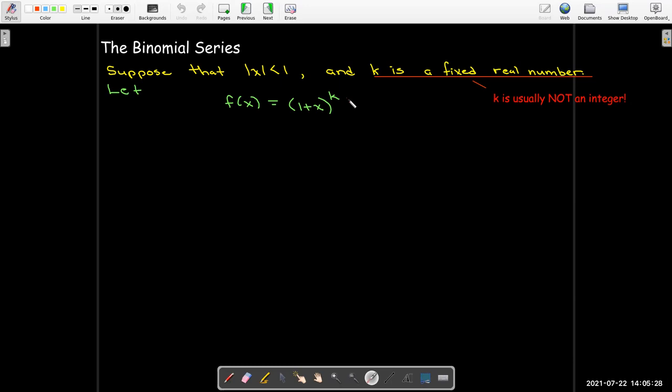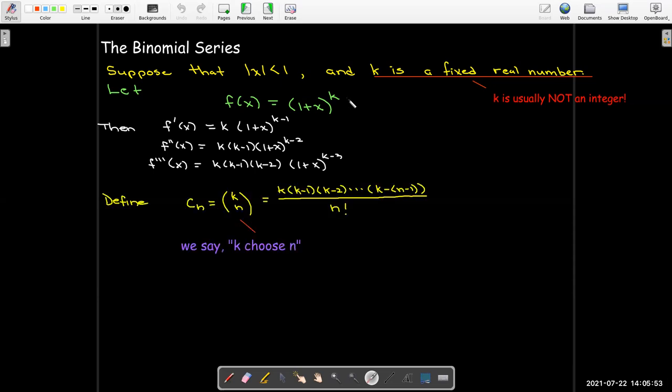I can still use the power rule when I take the derivatives. And sure enough, there's a pretty clear pattern here for the nth derivative of f of x. And so we can get the coefficients for our Taylor series or Maclaurin series using this formula.